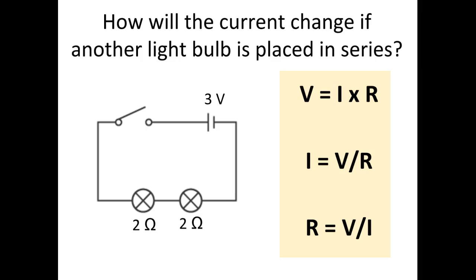How will the current change if we have that second light bulb in series with the first? First we had one light bulb and calculated 1.5 amps. Now that we add another light bulb, how would that change the total current? It would decrease the current. There's more resistance in the circuit now, so there will be less current because the voltage is still the same.